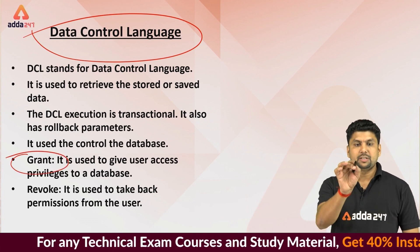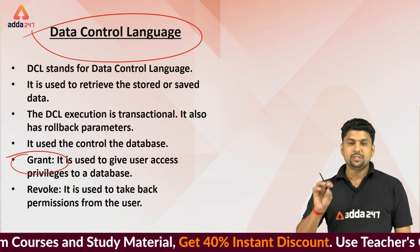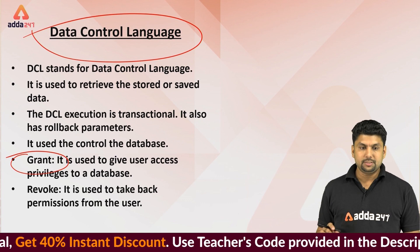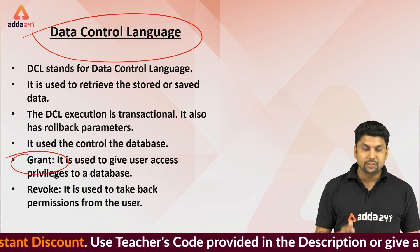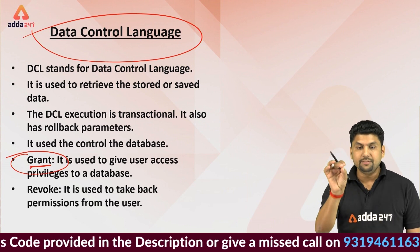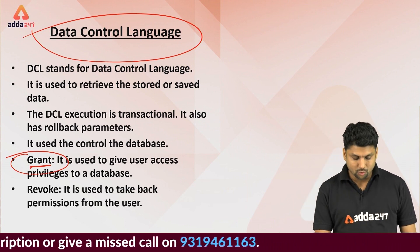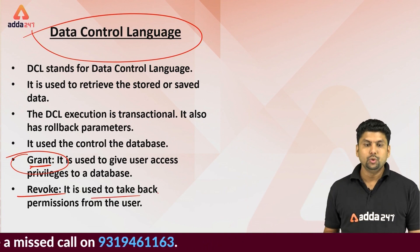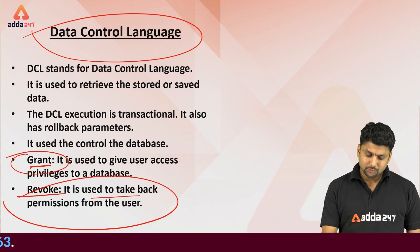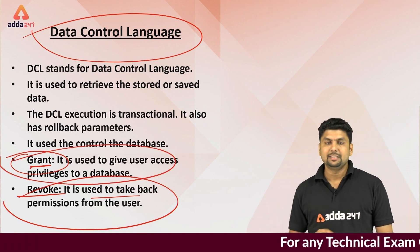DCL is used to retrieve, store and save data access privileges. The first command is GRANT — it is used to give user access privileges to the database. REVOKE is used to take back permissions from a user.